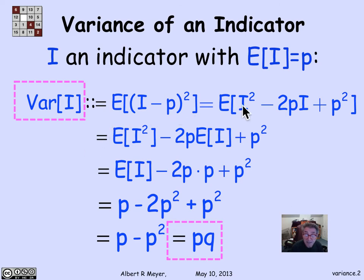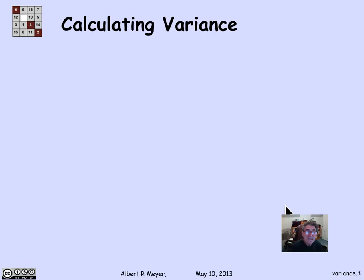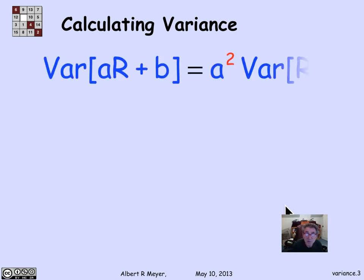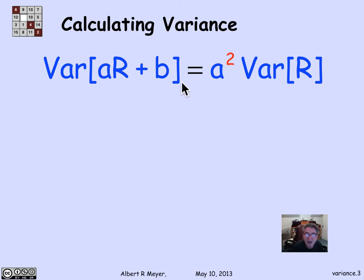That was easy and completely mechanical. There are a couple of other basic rules for calculating variance of new variables from old ones. The first rule is that the variance of (aR + b) equals a squared times the variance of R. The additive constant b doesn't matter. Because variance involves the expectation of something squared, when you factor out the constant a, you get a squared — that's the rule.